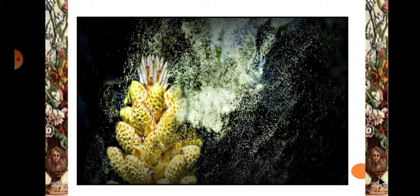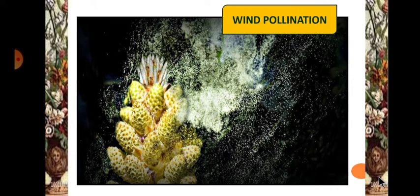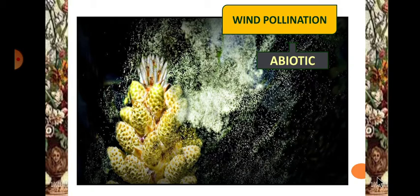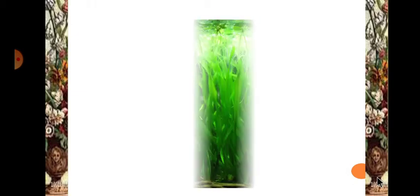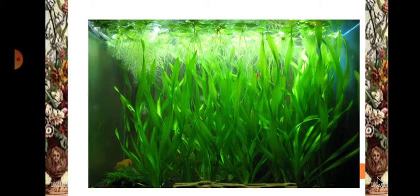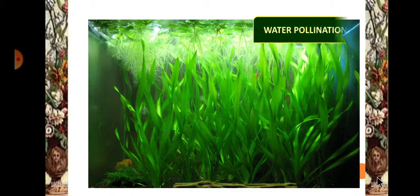Here is a video slide showing wind pollination. The anther gets dehisced and with the help of wind there is a transfer of pollen grains. Since wind is a non-living factor, it is called an abiotic agent. Here is a Vallisneria plant where pollination takes place through water, which is also an abiotic agent.